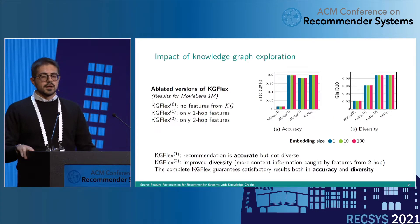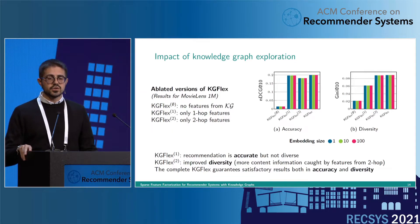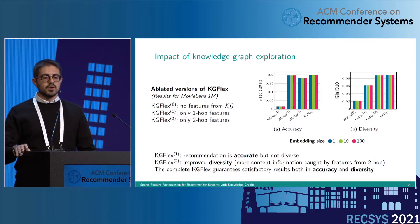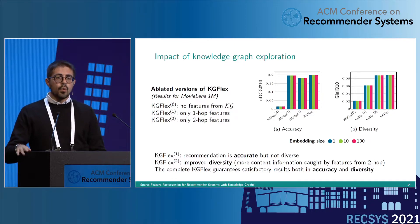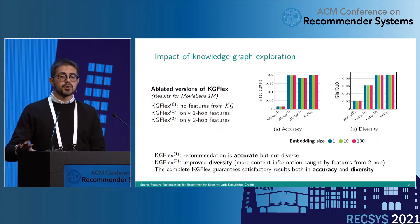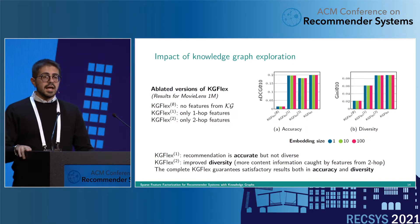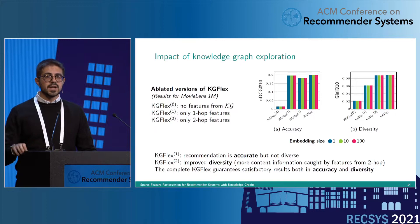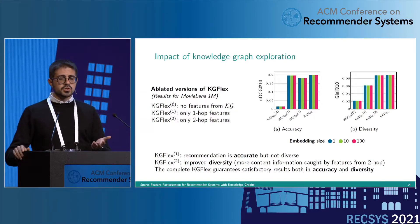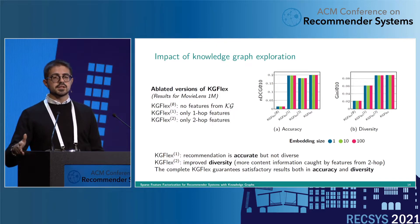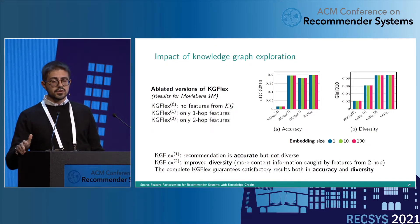We also analyzed the impact that the knowledge graph exploration depth has on accuracy and diversity. We overall found that the features coming from the first hop provide accuracy but not diversity, while the features coming from the second hop provide diversity — because they help KG Flex to catch more hidden information by means of features at a higher depth. The complete version of KG Flex guarantees satisfactory results both in accuracy and diversity.